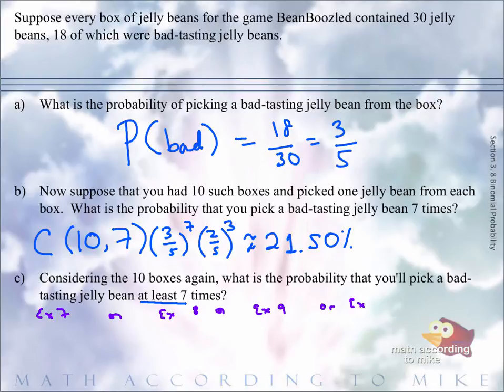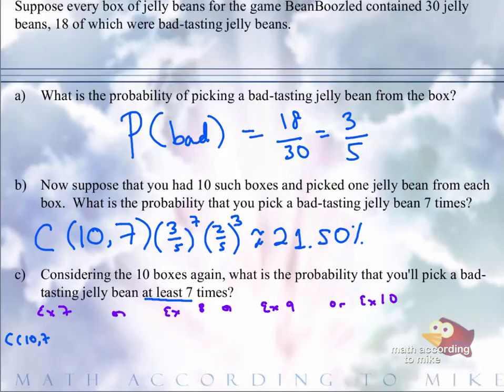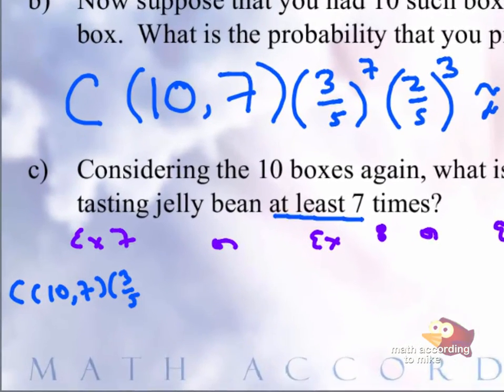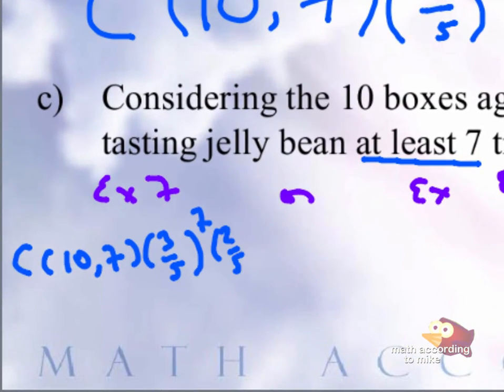And we stop at 10 because we only have 10 boxes. The setup for each of these exactlys is exactly like part B. We are just going to change the seven and the three. So let me copy down real quick exactly seven. I hope I have enough room to believe in myself. Doing it. Nailed it.